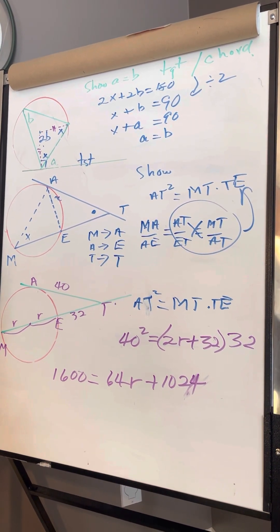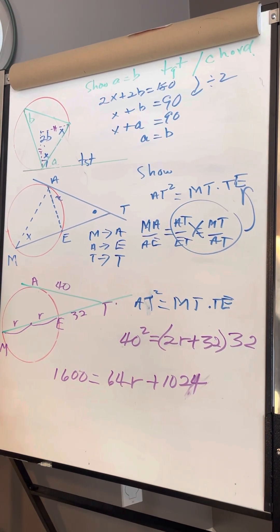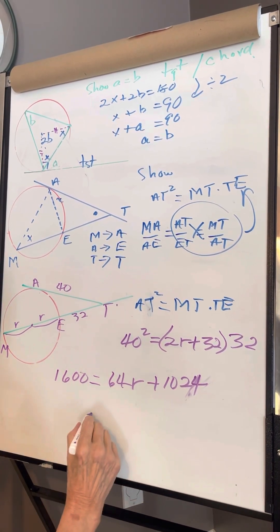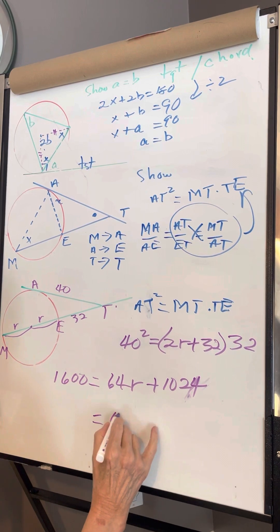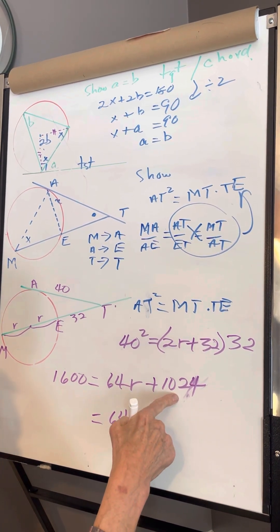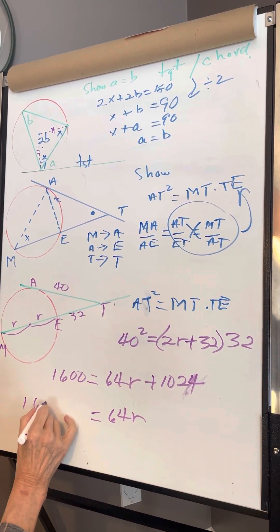So here's 64r. Transpose, so it's going to be 1600 - 1024 = 64r.